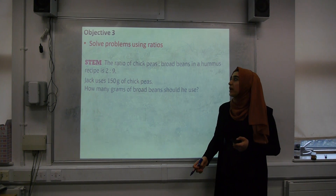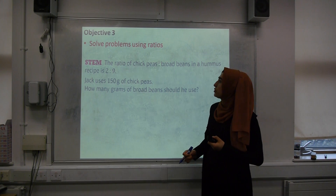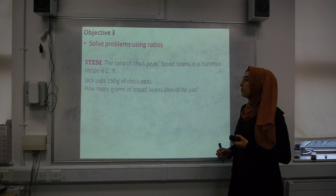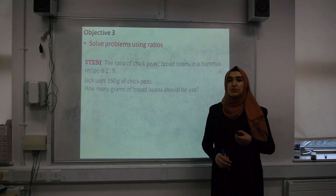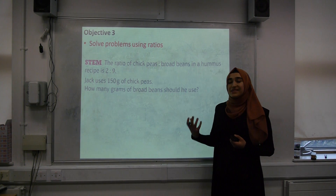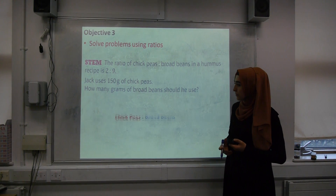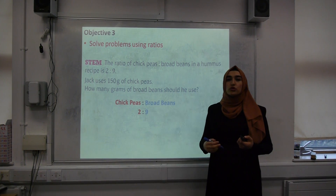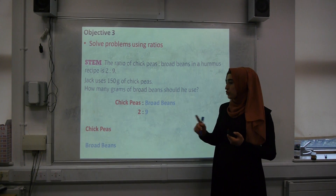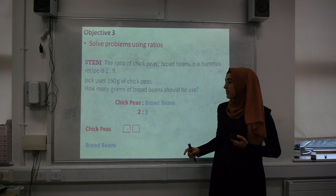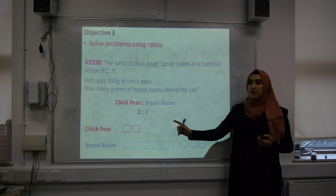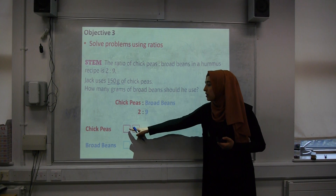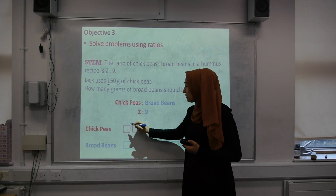Our final objective is to solve problems involving ratios. Here's a problem: the ratio of chickpeas to broad beans in a hummus recipe is 2 to 9. Jack uses 150 grams of chickpeas — how many grams of broad beans should he use? I'm going to give you a visual method. Chickpeas to broad beans is 2 to 9, so I draw 2 boxes for chickpeas and 9 boxes for broad beans. These 2 boxes represent 150 grams total.